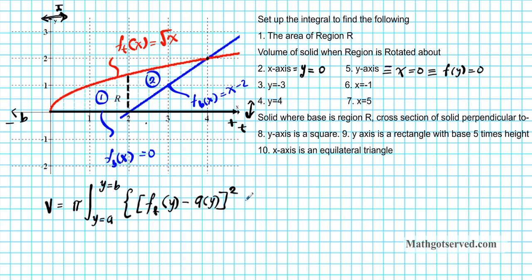Pi r squared gives you the area of the larger disk. The inner disk can be given as the function at the bottom as a function of y minus the same axis of rotation, squared. Pi r squared gives you the area of the inner disk, and the difference between these two areas gives you the area of the washer. Integrating from a to b gives you the volume of the resulting solid, so this is dy.